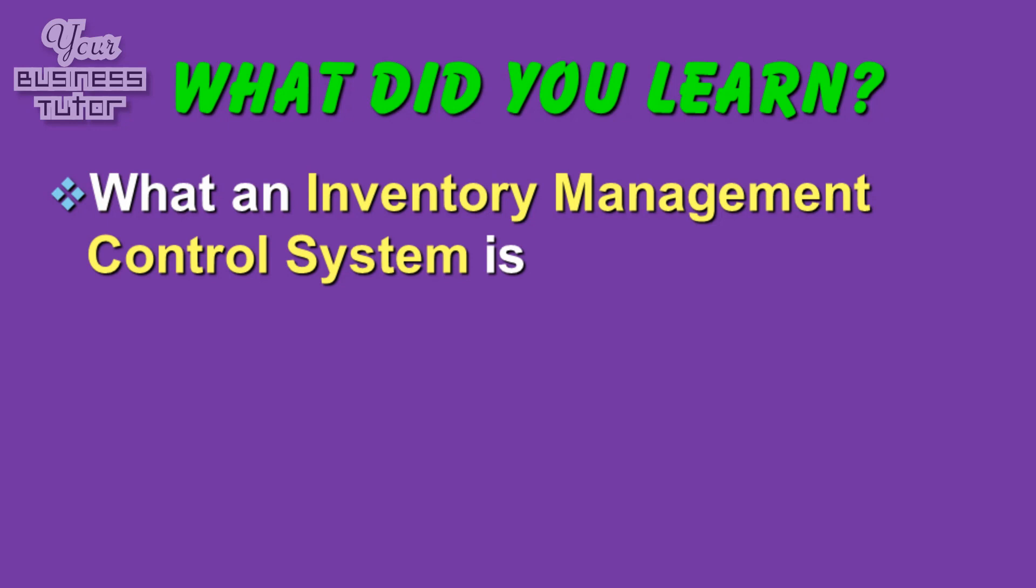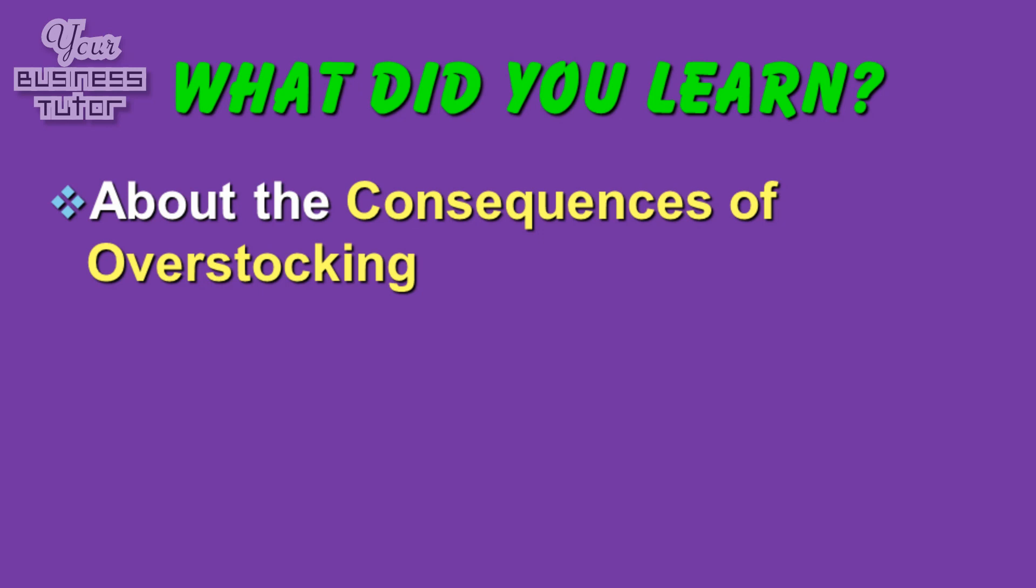Okay, so what did we learn in this presentation? Well, first of all, we found out what an inventory management control system is. Then we went on to investigate the consequences of overstocking, and then finally we explored the consequences of understocking. There is no doubt that effective inventory management can make a huge difference to a business as the consequences of both over and understocking are severe.